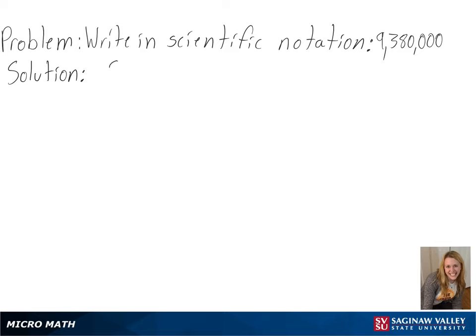Our problem is to write in scientific notation. The first part of our solution is to move the decimal in between the first two numbers — in this case, we are moving it in between the 9 and the 3. Since we are moving it 6 times, we will be multiplying our number by 10 to the 6th power.